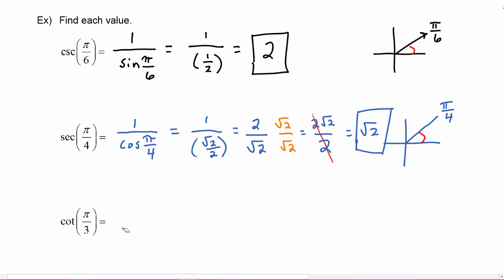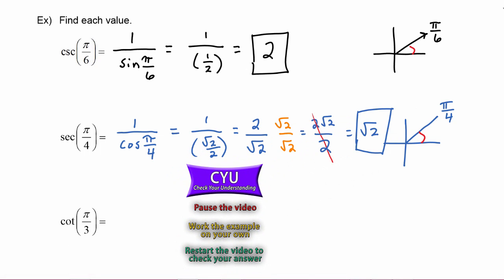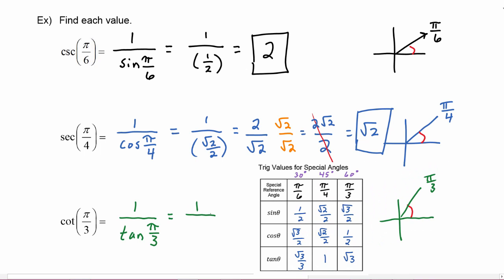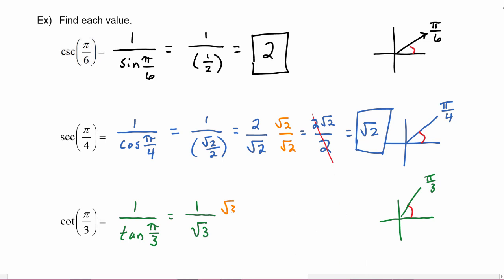For the cotangent of π/3: cotangent is 1/tan(π/3). Since π/3 is in quadrant one, it is its own reference angle. From the special angle chart, tan(π/3) = √3. Rationalizing: cot(π/3) = 1/√3 = √3/3.